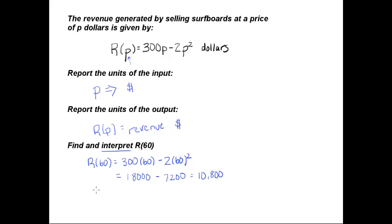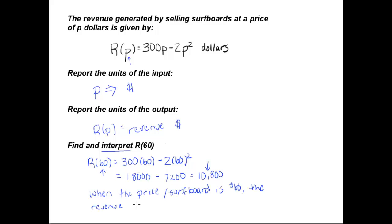Let's write the sentence that goes with this. We need to tell what the input of 60 and the output of 10,800 mean in the context of this problem. Our input is 60, so we could say: when the price is $60 per surfboard, the revenue is $10,800.